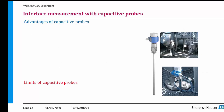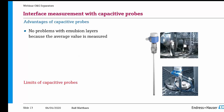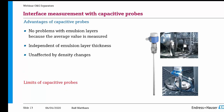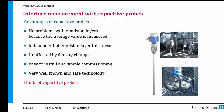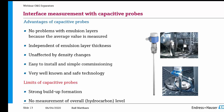The advantages of capacitance probes in general: no problems with emulsion layers because the average value is measured, independent of emulsion layer thickness, unaffected by density changes — so if the API changes, no problem. Easy to install, simple operation, very well known, and a very safe technology. The limits are buildup — whenever buildup forms on a rod, this causes challenges. Also you cannot measure the overall hydrocarbon level in a standard separator with this technology.